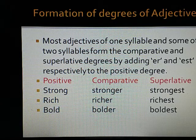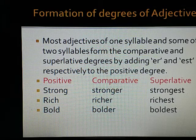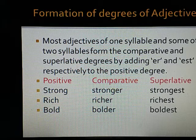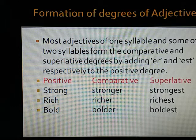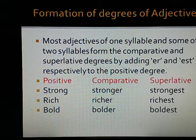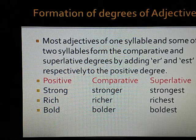Formation of degrees of adjectives: Most adjectives of one syllable and some of two syllables form the comparative and superlative degrees by adding ER and EST respectively to the positive degree. For example: strong, stronger, strongest; rich, richer, richest; bold, bolder, boldest.